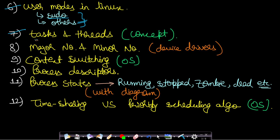The seventh topic is about tasks and threads. You should read about what are tasks, what are threads, how to create a thread, and how to kill a task. The eighth topic is about major number and minor number, which is related to device drivers. This is an easy concept — you don't need to deep dive, just know the basics of what they are.